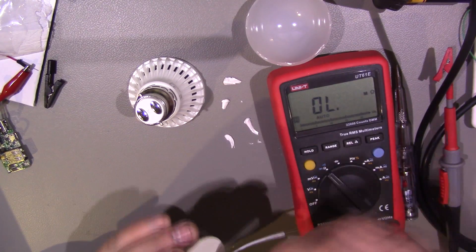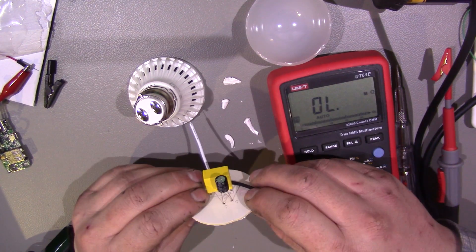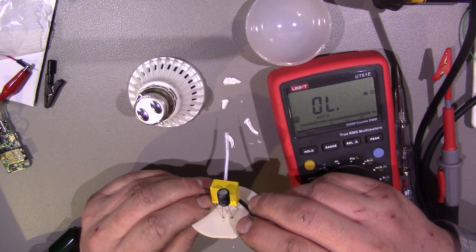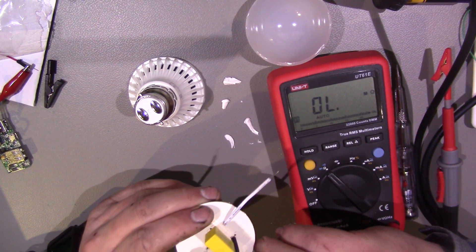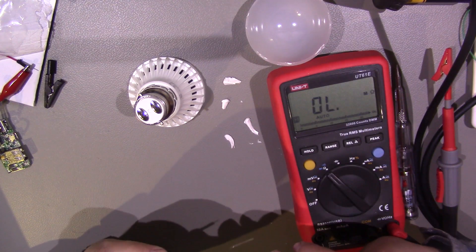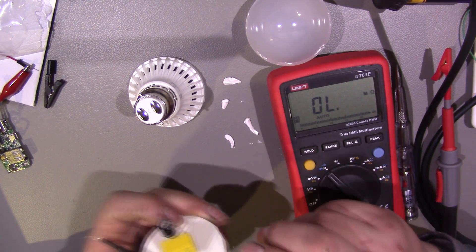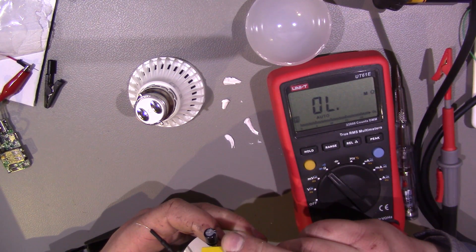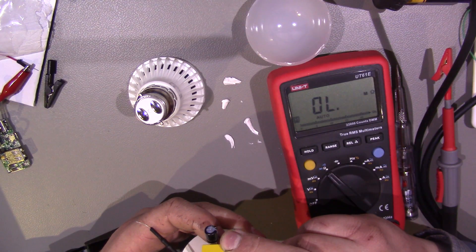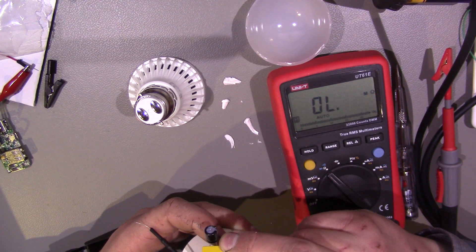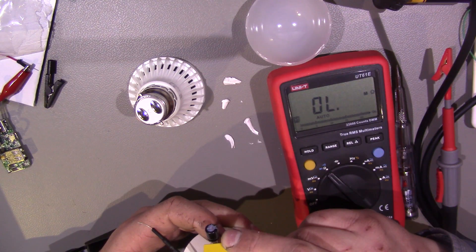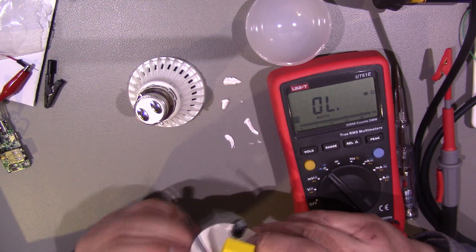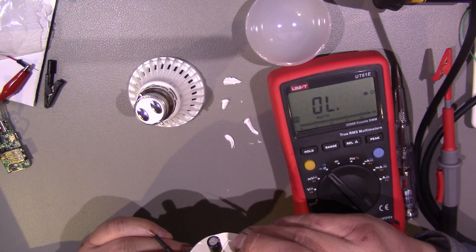Then we've got a capacitor here. So that's 3.3 microfarad, 400 volts, 105 degree rated. So the voltage and temperature rating of that seems perfectly adequate. And then we've got another capacitor here. What have we got on that one? 250 volts, 275 volts. Can't see a microfarad rating on that one.